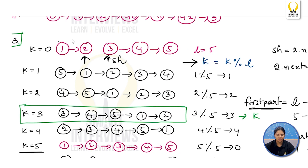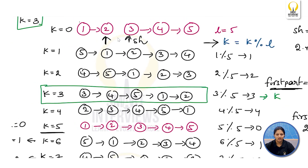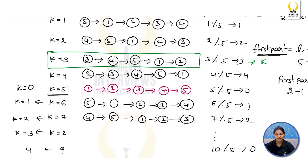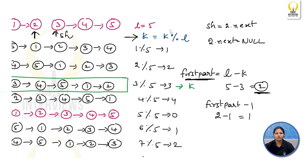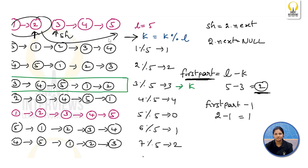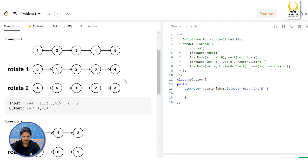Quick summary: given a list to rotate by k places to the right, first minimize rotations using k = k mod L. Then separate the list into two parts — the first part has (L - k) nodes. Jump (L - k - 1) steps to reach the split point, break the link, store the second head, find the tail of the second part, connect it to the first part's head, and return the second head.